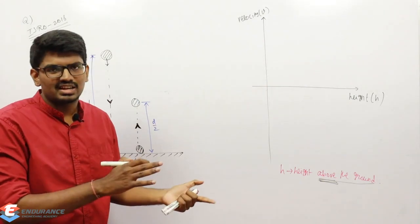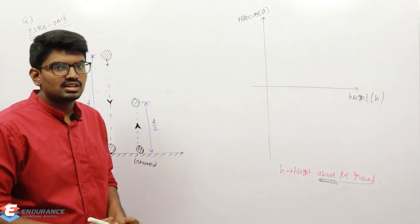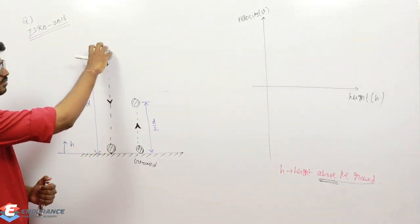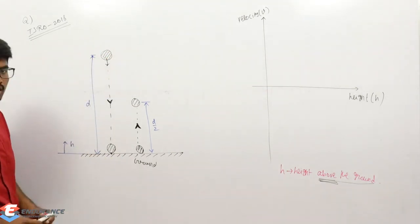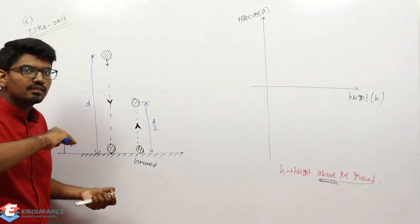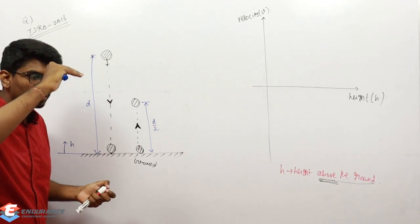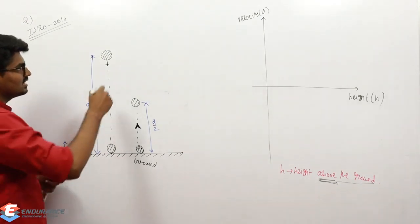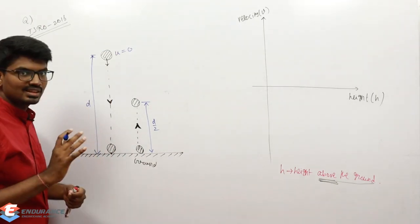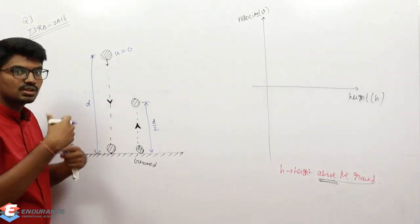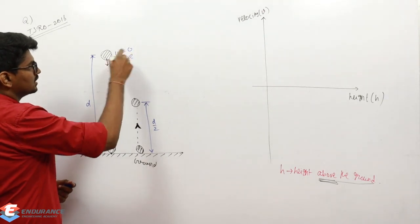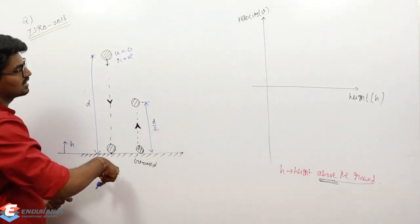They are asking us to find the relation between velocity and height, and four options with different diagrams are given. First, let's take the descending case — I'm dropping the ball and it is reaching the ground. Since I'm dropping it without any projection, the initial velocity is zero. The acceleration due to gravity g acts in the direction of motion, so g is positive.